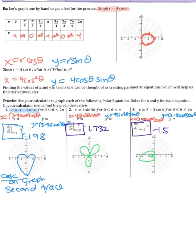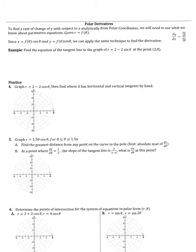Since polar behaves like a parametric equation when expressed in x and y, we find dy/dx the same way: dy/dx = (dy/dθ) ÷ (dx/dθ). Just as with parametrics we found dy/dt over dx/dt, here in polar we find dy/dθ over dx/dθ. For the next example we first define x and y, then find dx/dθ and dy/dθ, and work from there.